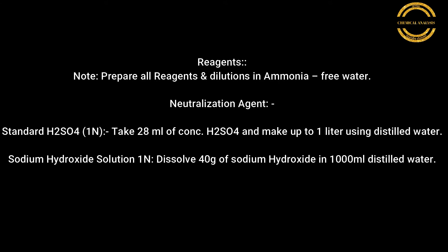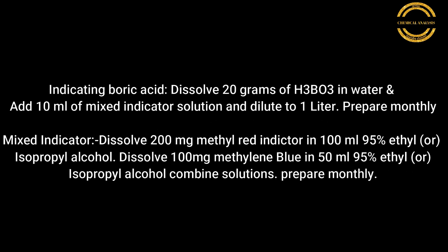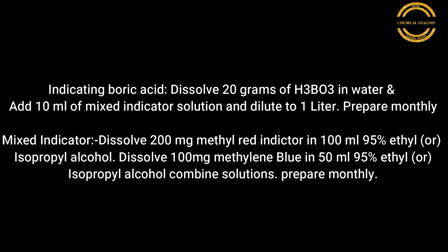For 1 normal sodium hydroxide preparation, dissolve 40 grams of sodium hydroxide in 1000 ml distilled water. For boric acid preparation, dissolve 20 grams of H₃BO₃ in water, add 10 ml of mixed indicator solution, and dilute to one liter. This solution should be prepared monthly. For mixed indicator preparation, dissolve 200 mg methyl red indicator in 95% isopropyl alcohol.